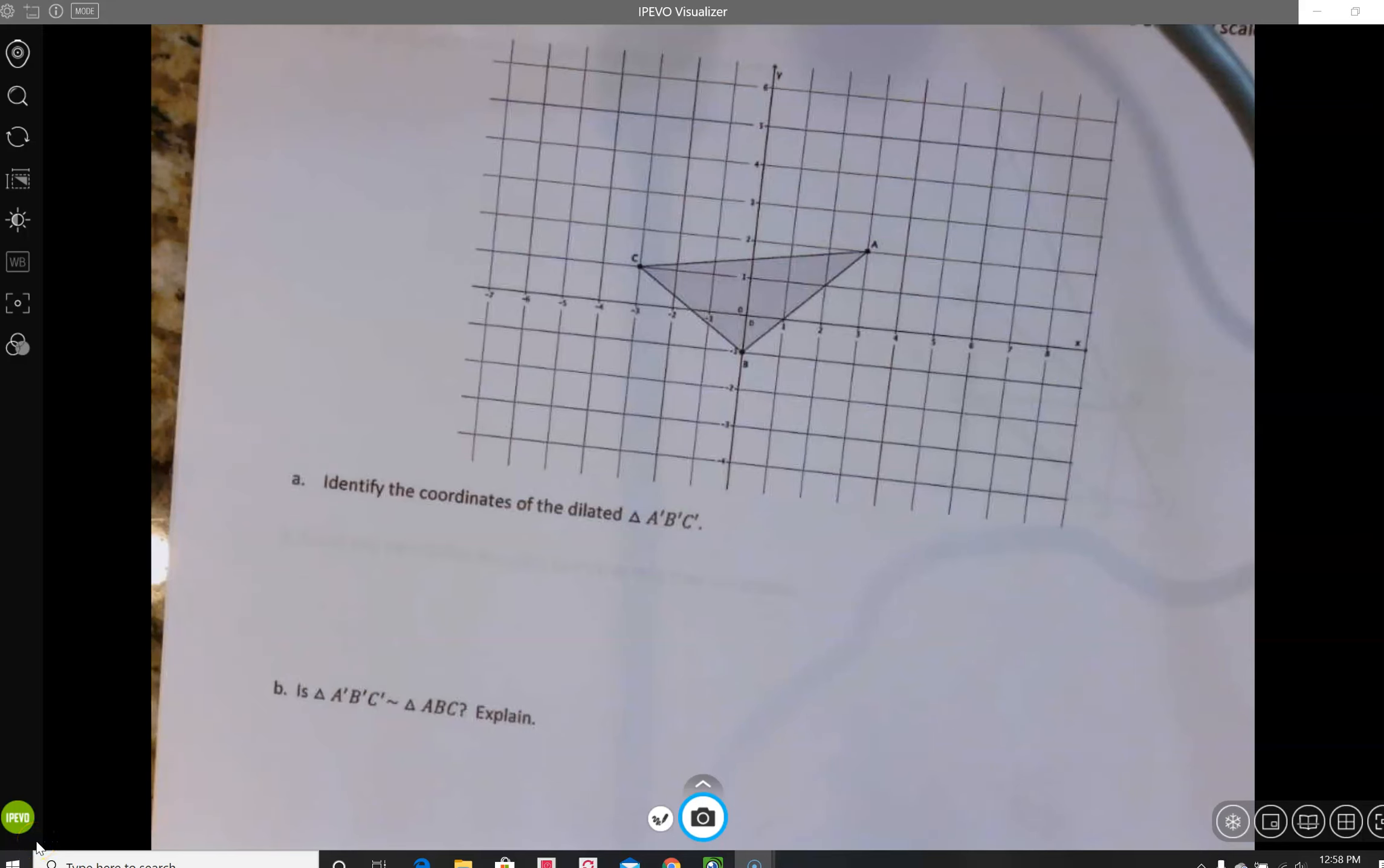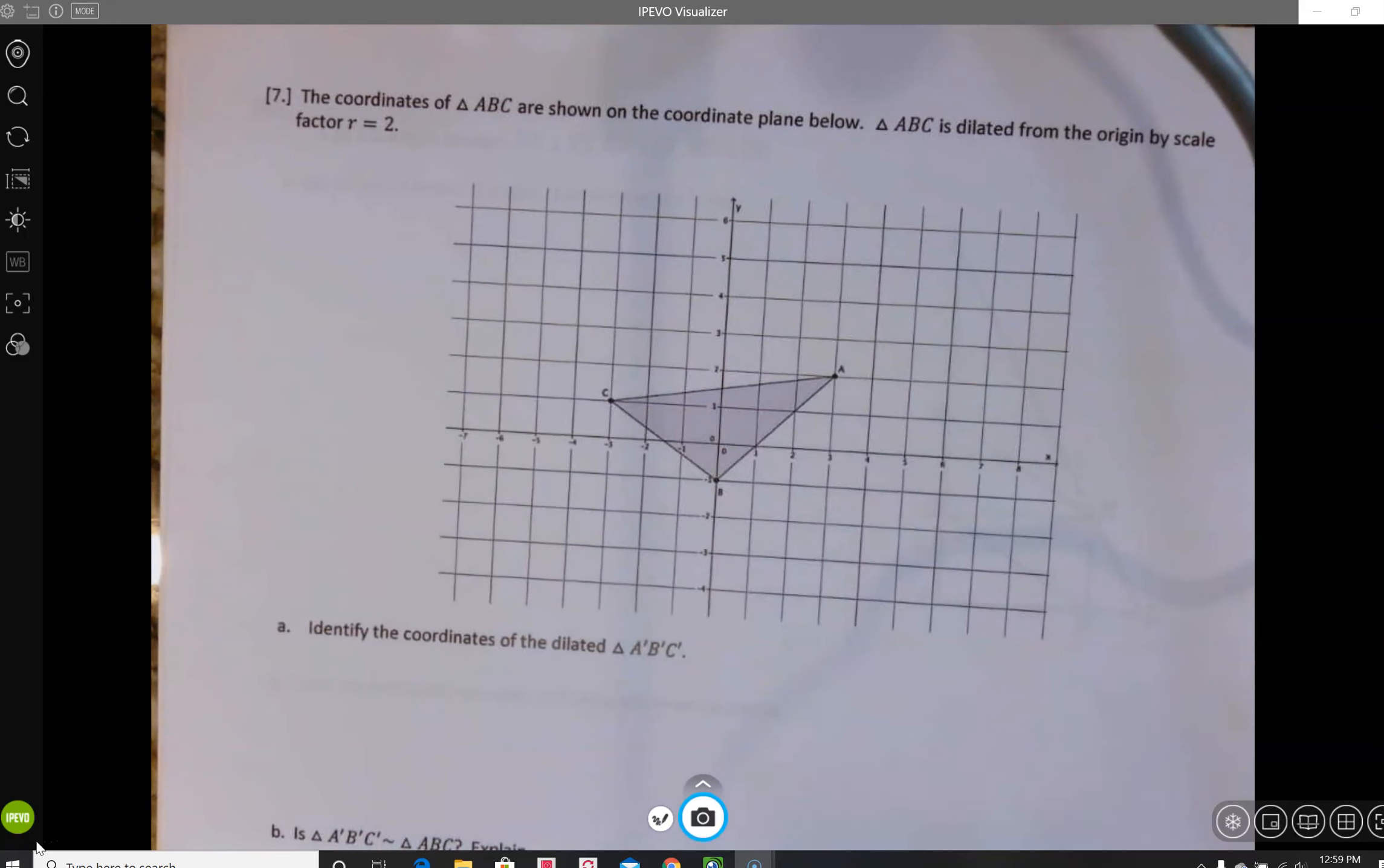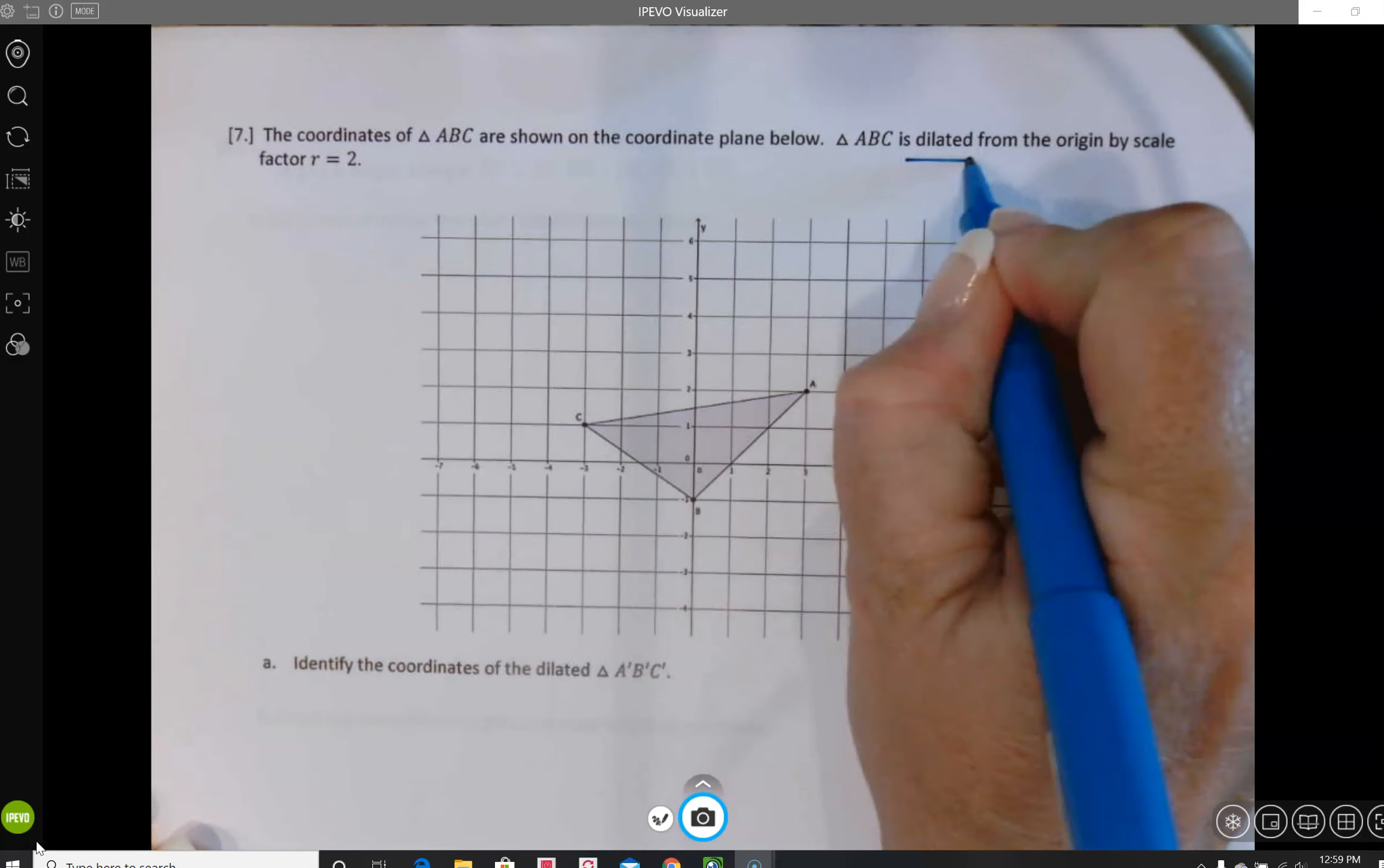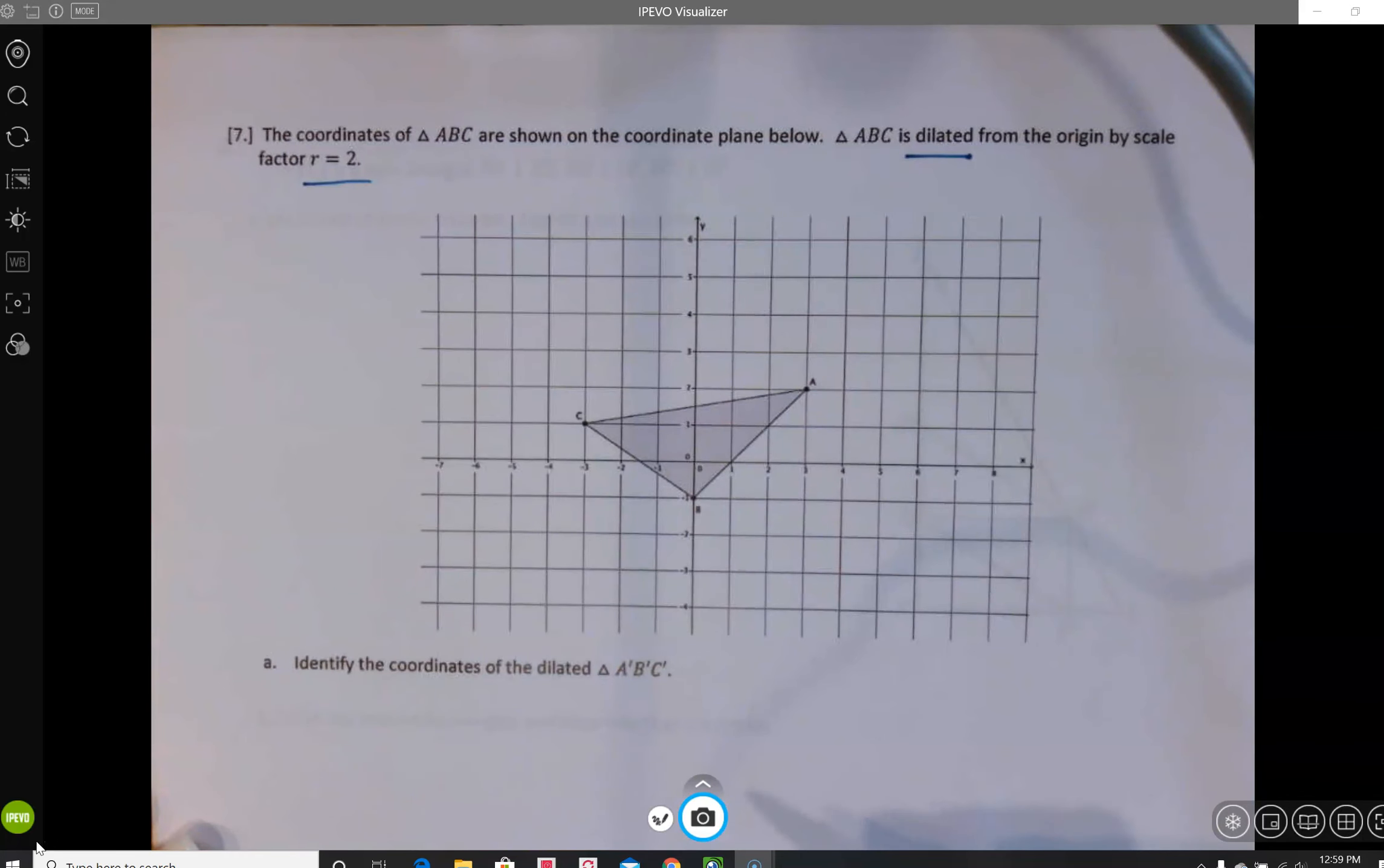All right, here we go on problem number seven. We've got another coordinate plane with a triangle drawn. The coordinates of triangle ABC are shown on the coordinate plane below. Triangle ABC is dilated from the origin by a scale factor of r equals 2. Remember, to dilate means you're going to stretch or compress. We've got a scale factor greater than 1, so this one's going to be a stretch.